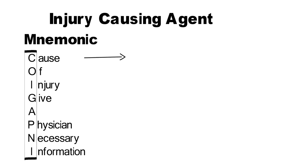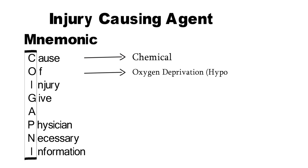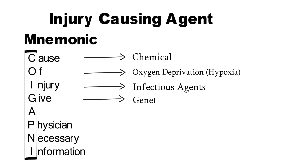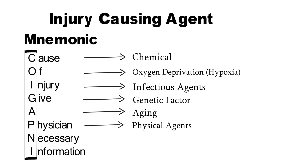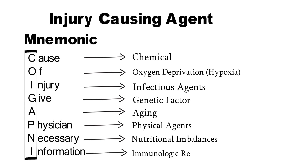In 'cause,' C stands for chemical. In 'of,' O stands for oxygen deprivation — generally we use hypoxia for oxygen deprivation. In 'injury,' I stands for infectious agents. G stands for genetic factor. A stands for aging. In 'physician,' P stands for physical agents. In 'necessary,' N stands for nutritional imbalance. And in 'information,' I stands for immunologic reaction.